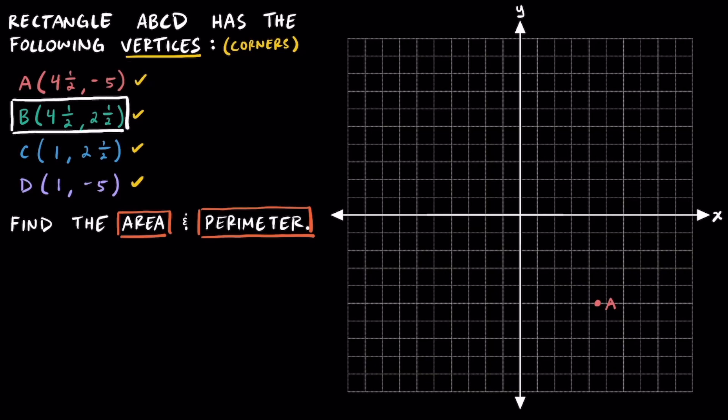For point B, we're going to start at the origin and move four and a half units to the right and then two and a half units up to plot point B over in quadrant one.